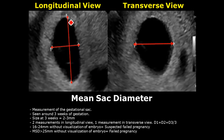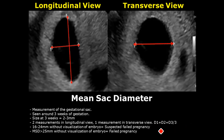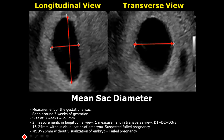Mean sac diameter is the measurement of the gestational sac. It is measured by taking two measurements in the longitudinal view and one measurement in the transverse view; we add these three values and divide by three. If the mean sac diameter is 16 to 24 millimeters and there is no visualization of the embryo, it may indicate a failed pregnancy but is not confirmed. If the mean sac diameter is more than 25 millimeters and there is still no visualization of the embryo, then it is a failed pregnancy.